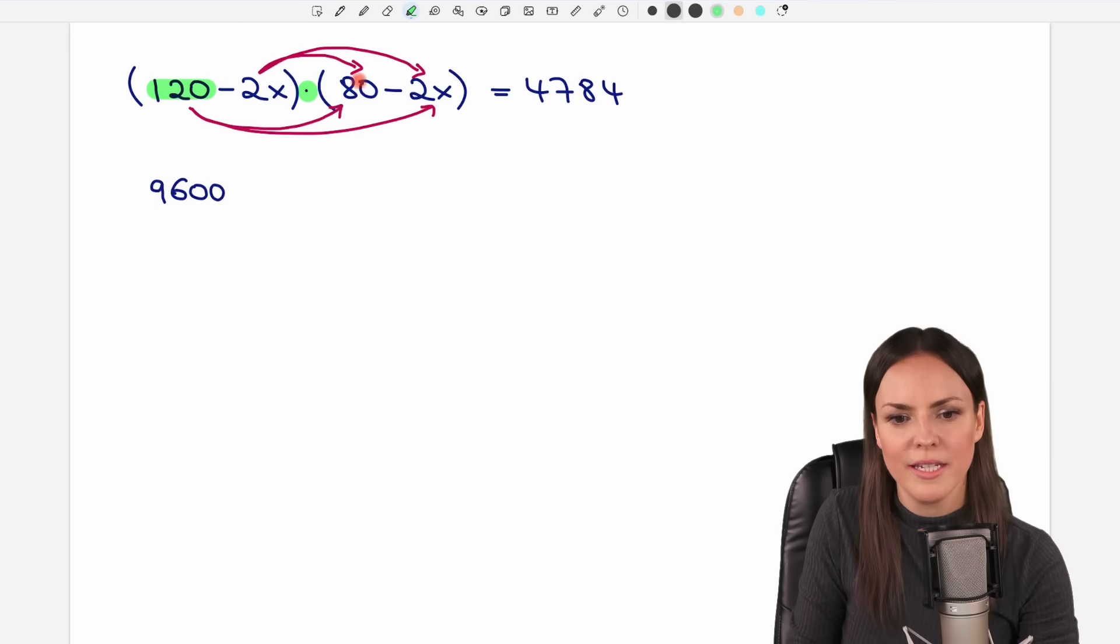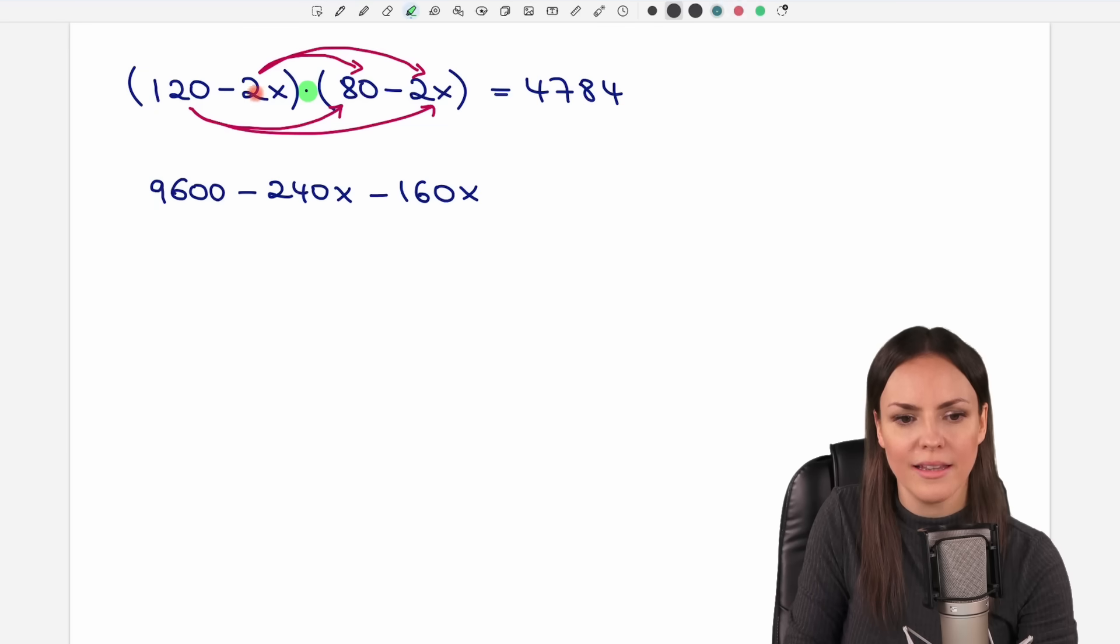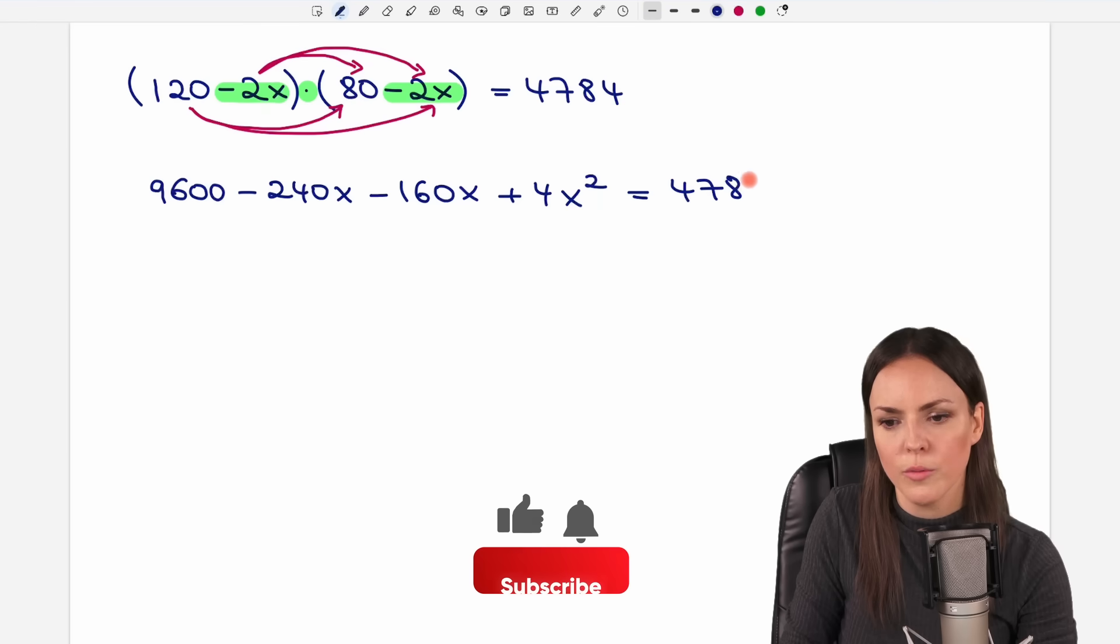Then the first element here and the second here. So 120 times negative 2x. The result is going to be negative. The numbers we get 240 and then the x. So negative 240x. Then this element in the first here. So negative 160x is what we get. And then the last elements are these two. Negative times negative equals positive. So 2 times 2 equals 4. And x times x equals x squared. On the other side we have our beautiful number.